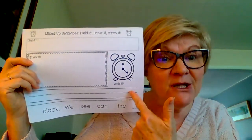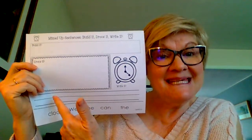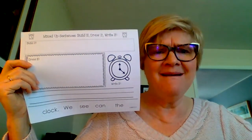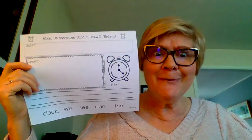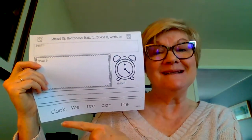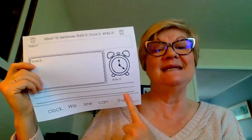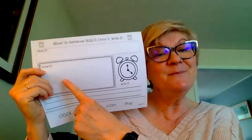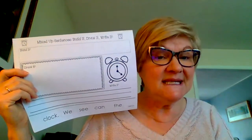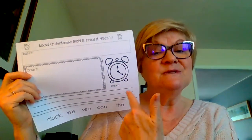If it makes sense, you got it! And you need to write it just like you built it — with the capital at the beginning and the period at the end. If you put those words in the middle and they don't make any sense, move them around until you build the sentence using the words: clock, we, see, can, and that. Then you're gonna draw a picture of it.